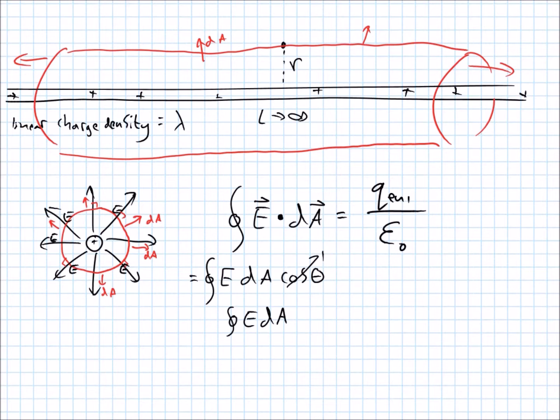Or in other words, the electric field is a constant with respect to the area. So we can just pull that out of the surface integral. And the surface integral of dA is just A. So, if you pick the right Gaussian surface, Gauss's law simplifies down to this.